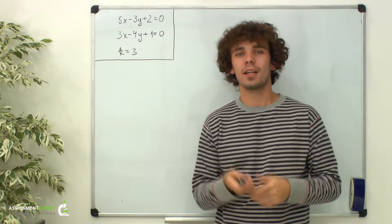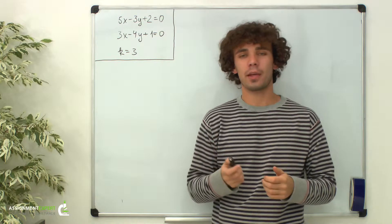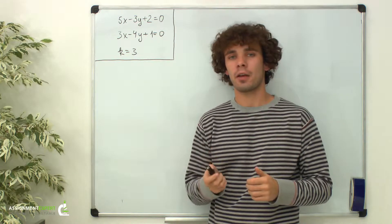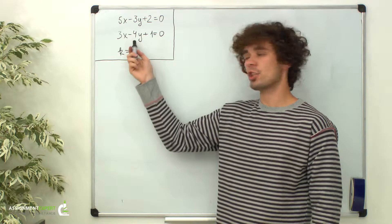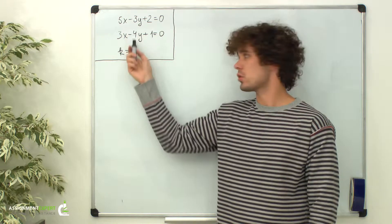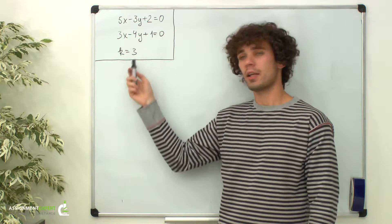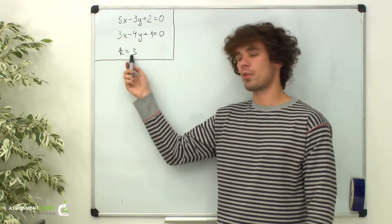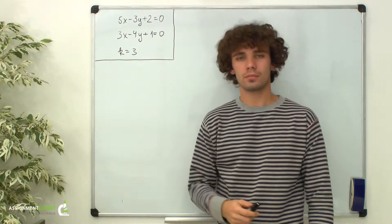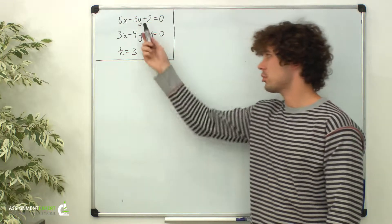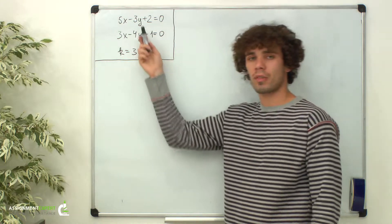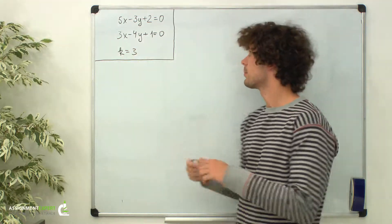Hi there. Let's find the equation of the line that passes through the intersection point of these two lines and has a slope of 3. First of all, we need to find the intersection point of these lines.